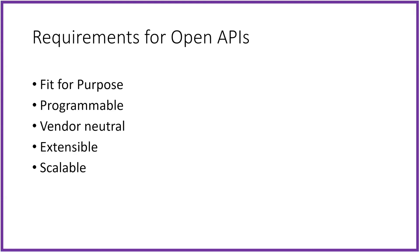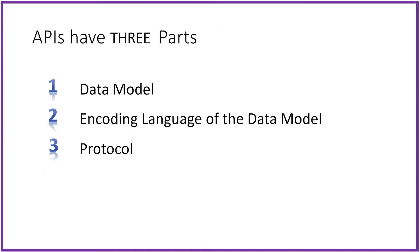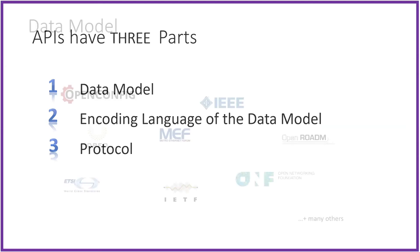APIs also need to be scalable. So what is an API? There are really three parts: the data model, which describes what the service looks like; the encoding, which is how you structure the information — you encode the data model into a language that both the network management system and the network element understand; and the protocol, which defines the rules governing how we exchange data between the NMS and the network element.